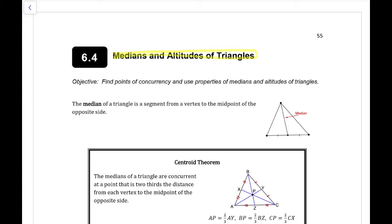On 6.4, we're looking at medians and altitudes of triangles. We're on page 55 of our note guide. A median is a line between a vertex and the midpoint of the opposite side.